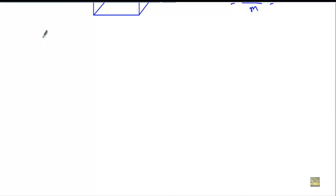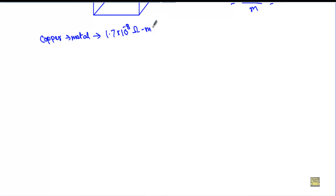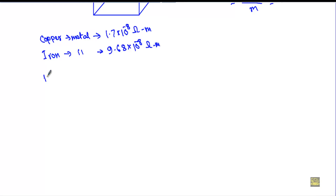Let's look at specific resistivity values for different materials. Copper, a metal, has a specific resistivity of 1.07 × 10⁻⁸ ohm meter. Iron, also a metal, has a specific resistivity of 9.68 × 10⁻⁸ ohm meter.